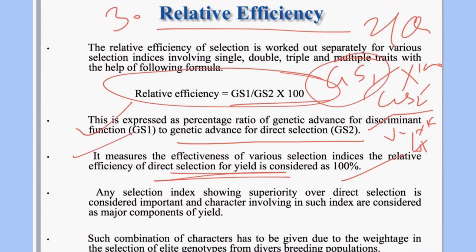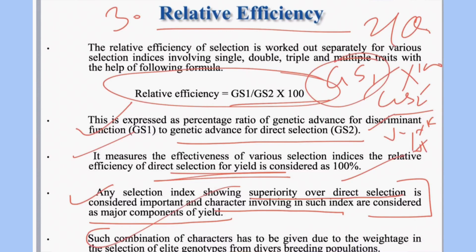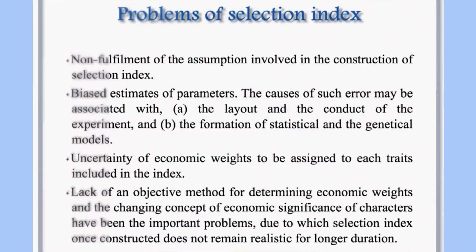Relative efficiency measures the effectiveness of various selection indices. The relative efficiency of direct selection for yield is considered 100 percent. Any selection index showing superiority over direct selection means the characters involved are important major components of yield. The contribution of such characters is 100 percent, and the combination of such characters is given due weightage in selecting superior genotypes from diverse breeding populations.